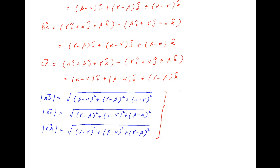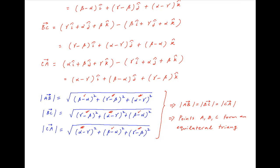Notice that on the right hand side of these three expressions, (beta minus alpha) squared is common. Similarly, (gamma minus beta) squared is also common, and finally (alpha minus gamma) squared is also common. This therefore implies that the absolute value of vector ab equals the absolute value of vector bc equals the absolute value of vector ca. It therefore follows that the points a, b, and c form an equilateral triangle, which is the required result.